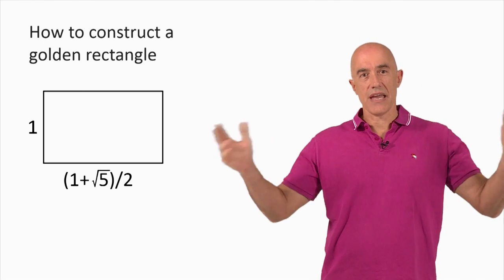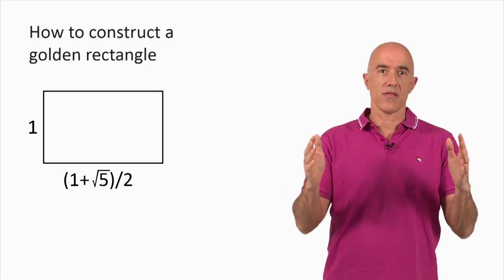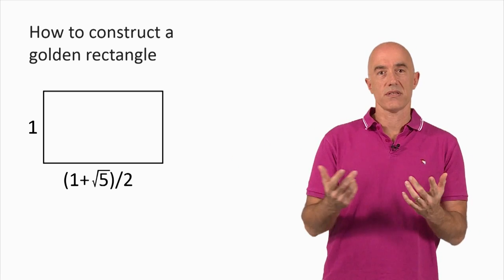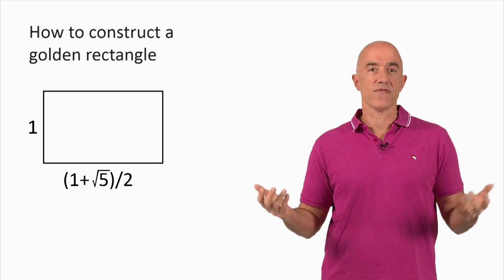So the length, the longest side of the rectangle, divided by the width, the shortest side of the rectangle, is equal to capital phi, 1 plus square root of 5 over 2.